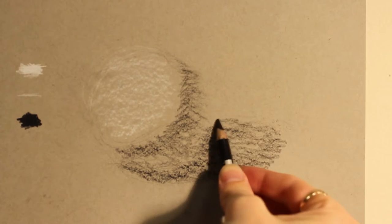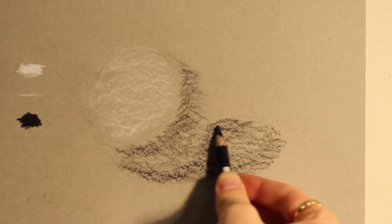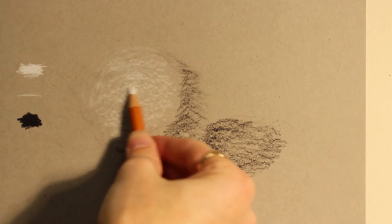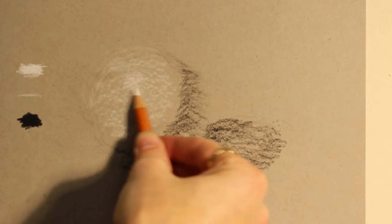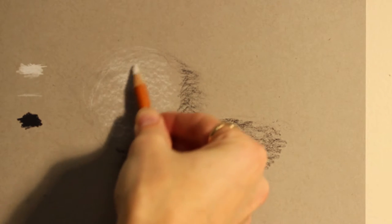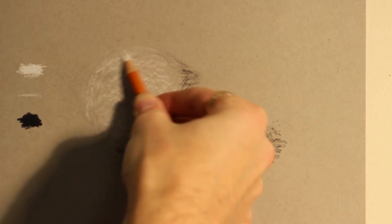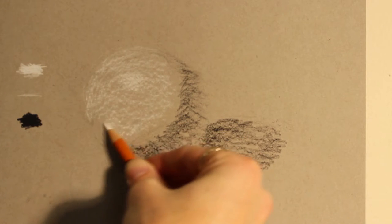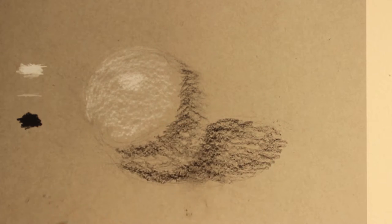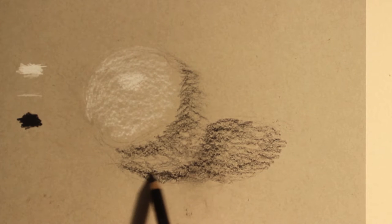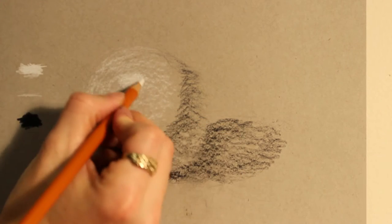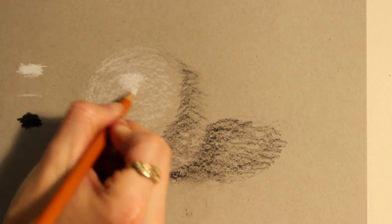This really quickly establishes the basic value pattern of your drawing. You develop your shadow core, develop your cast shadow a little bit, start pushing the values apart, begin differentiating everything, beginning to identify the highlight location, and work your way out to the edges.